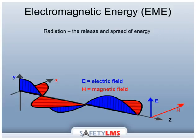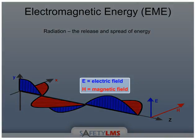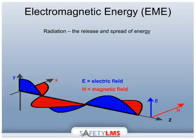All energy takes the form of radiation. The wave is made up of electric (E) and magnetic (H) energy fields, which interact with each other to form electromagnetic radiation, or energy.